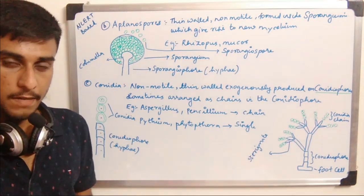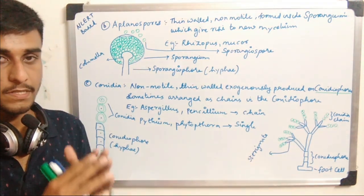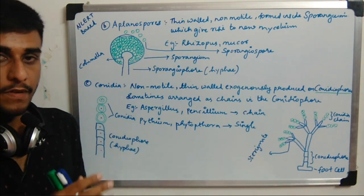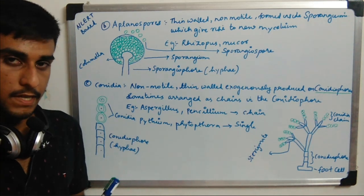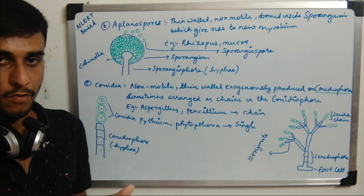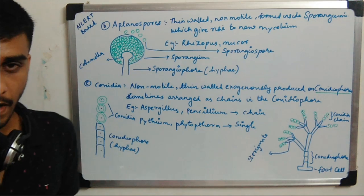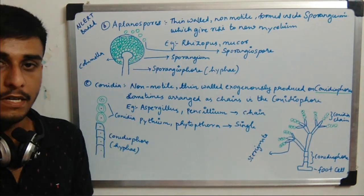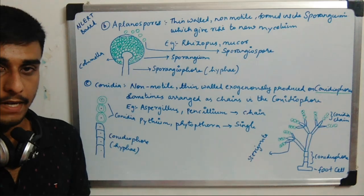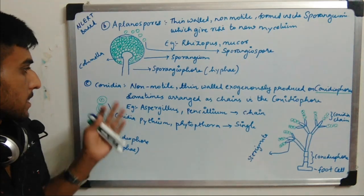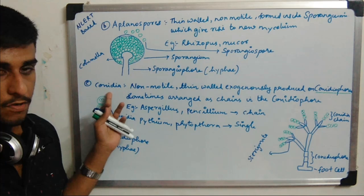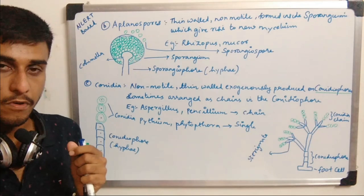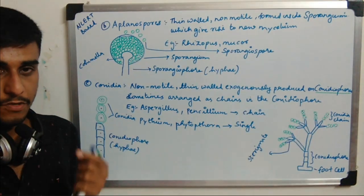We can't see these spores because these structures are usually microscopic in nature. The spores are everywhere in our environment but we can't see them with our naked eyes. The next method is by conidia. Conidia are also certain spores produced asexually by fungi.